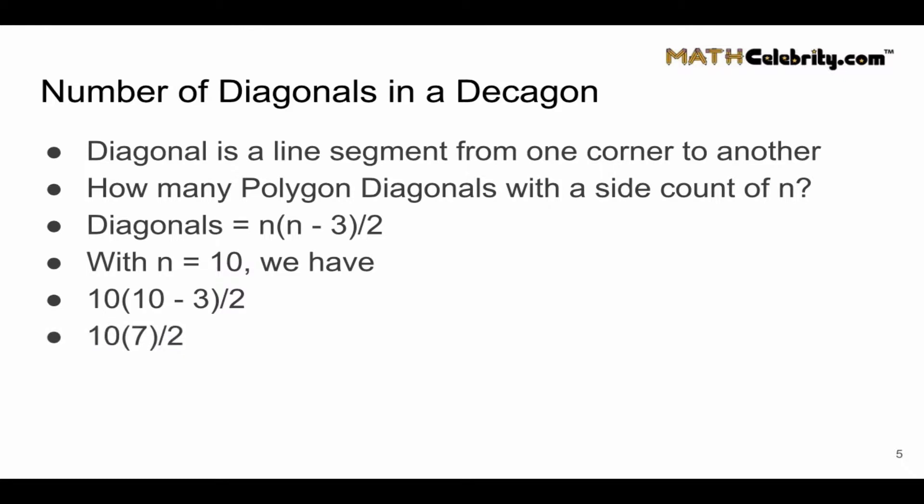Which is 10 times 7 divided by 2, which is 70 divided by 2, which is 35 total diagonals you can draw inside a Decagon.